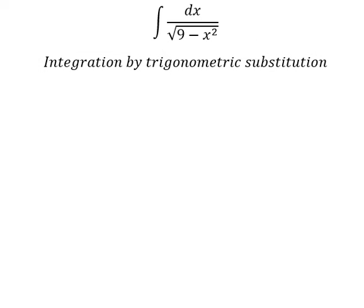So we put x equal to 3 sine t. Because if we put this in here, you will get 9 sine t squared. We can do factorization: 1 minus sine t squared, we change for cos t squared.